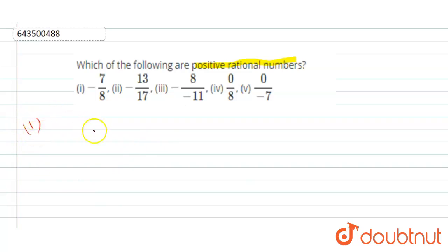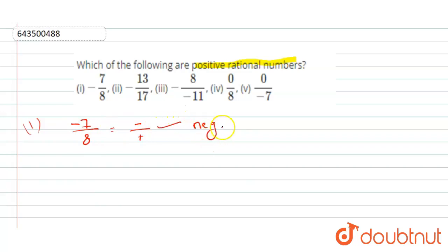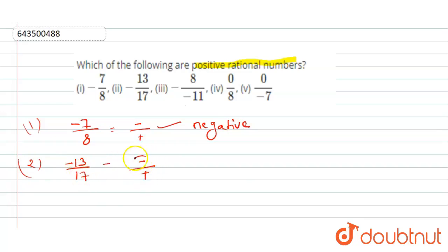We will start from the first one. The first one is minus 7 upon 8. Here we see a minus upon plus symbol, so this is a negative rational number. The second one is minus 13 upon 17. Again, there is one negative symbol, so this is also a negative rational number.